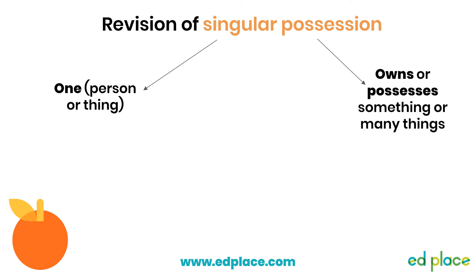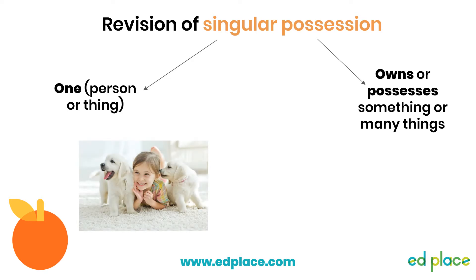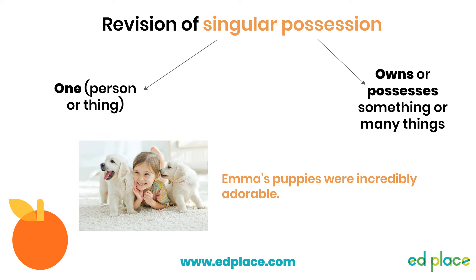Let's look at some examples. This child is Emma and she owns two very adorable puppies. To show her ownership, we can write the sentence: 'Emma's puppies were incredibly adorable.' An apostrophe for possession should always be in the word which owns something. So here, Emma is the one who owns something. It shouldn't be in 'puppies' because they do not own anything.